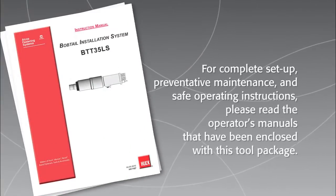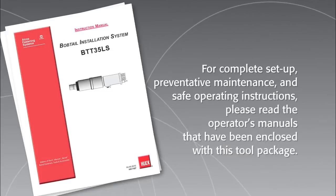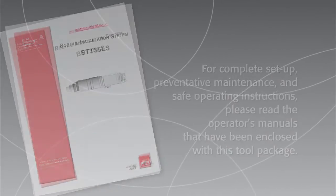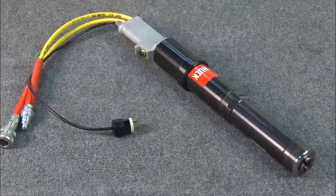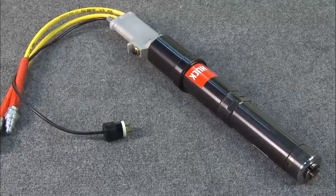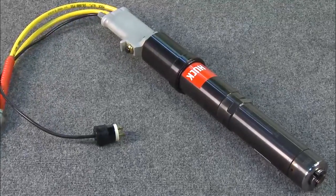For complete setup, preventive maintenance, and safe operating instructions, please read the operator's manuals that have been enclosed with this tool package. The Hook model BTT-35-LS is a hydraulic installation tool specifically designed to install and remove bobtail fasteners in limited clearance applications.